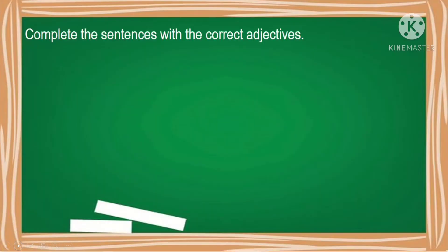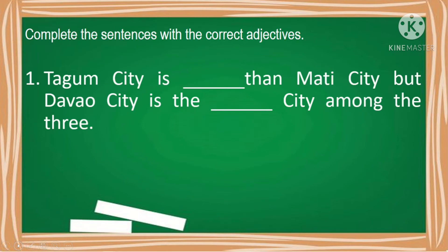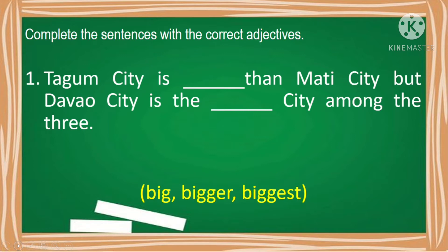Now let's try to complete sentences with the correct adjectives. Tagum City is blank than Mati City, but Davao City is the blank city among the three — big, bigger, biggest. The correct answers are: Tagum City is bigger than Mati City, but Davao City is the biggest city among the three.